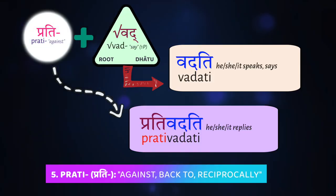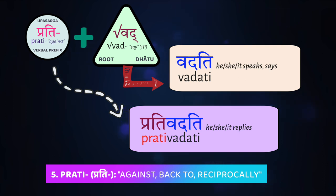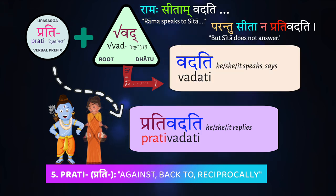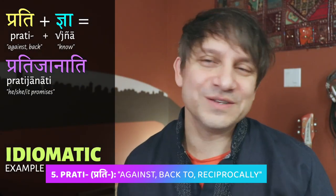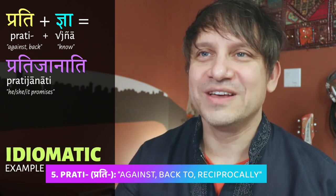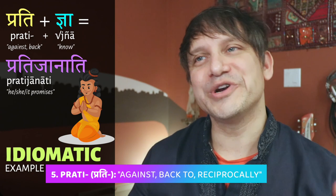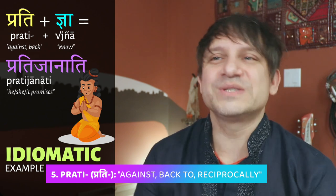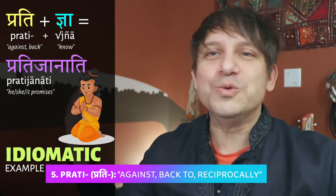A similar prefix to ā is prati, which means 'against or back towards' in a reciprocal action. If vad means 'to say or speak,' prati plus vad means 'to answer, to reply, to speak back to someone.' Rāmaḥ Sītām vadati — 'Rāma speaks to Sītā.' Parantu Sītā Rāmam na pratī vadati — 'Sītā does not speak back to Rāma, does not answer Rāma.' Idiomatically, prati plus jñā means 'to make a promise or an oath' — Lakṣmaṇaḥ pratijānāti means 'Lakṣmaṇa promises.'